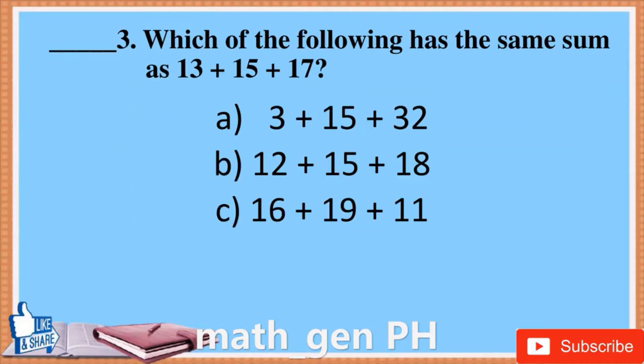Question 3: Which of the following has the same sum as 13 plus 15 plus 17? A. 3 plus 15 plus 32, B. 12 plus 15 plus 18, C. 16 plus 19 plus 11.